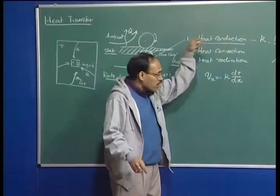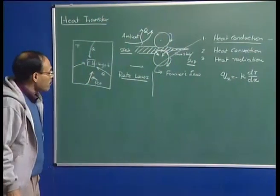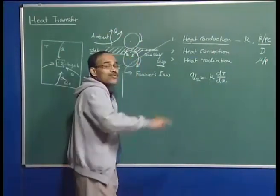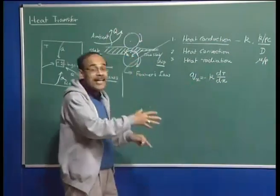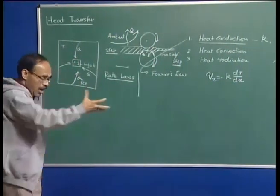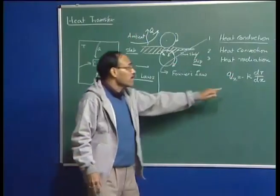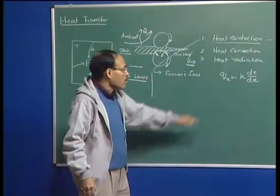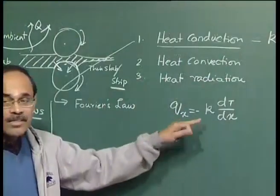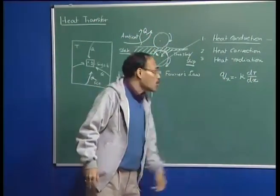Heat flows from a region of higher temperature to a region of lower temperature, which is why Fourier's law carries a negative sign by convention. Thermal conductivity may be a direction-sensitive or structure-sensitive property. If thermal conductivity is the same in all directions, we say the material is isotropic. On the other hand, if thermal conductivity differs in the x, y, and z directions — kx, ky, kz — then we say it is a non-isotropic material.